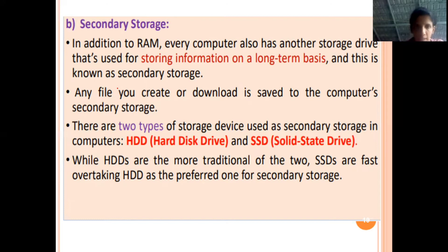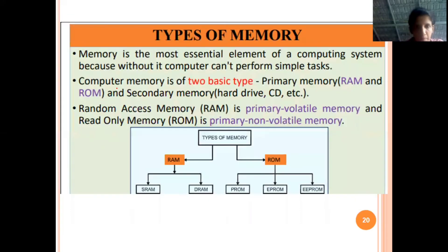The types of memory are: main memory, which is primary memory, and secondary memory. Primary memory includes RAM — random access memory — which is volatile memory, and that is why it has a limited amount of space.